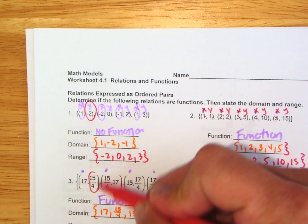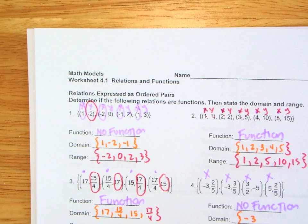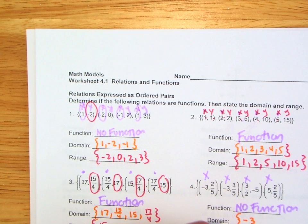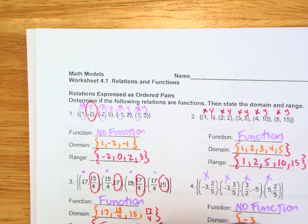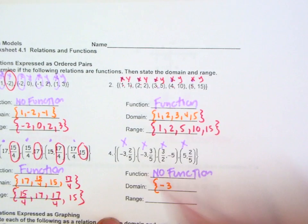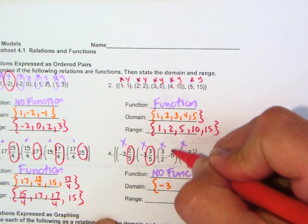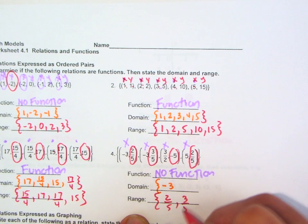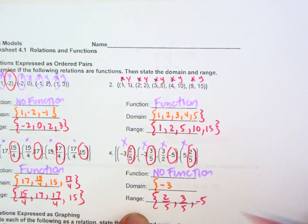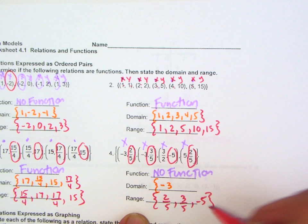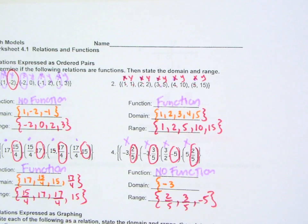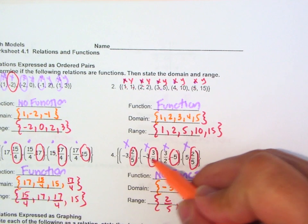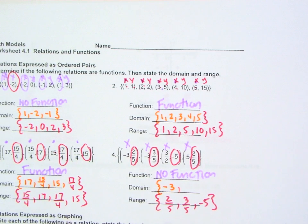And let's go ahead and write it. Here we go. Set notation. Let's do the next one. So we're going to keep doing the X, Y coordinates. The range: 2 over 5, 3 over 5, negative 5, and 2. Wait — we see 2 over 5 again, so don't include it. And now the domain. I see a negative 3 again — repeat, so no. There you go.